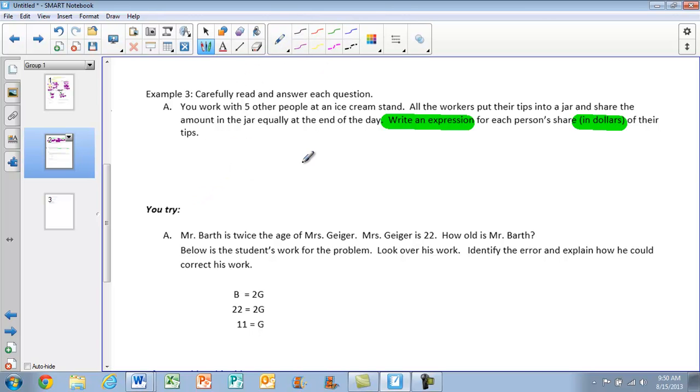So let me think here. I work with five other people. We all put our money into a jar. So amount in a jar. Doesn't say how much money. So I'm going to give this a variable. I'm going to say that's A. And the number of people I work with. Well, if I'm working with five other people, I have to add me in there at the end of the day. So that's six total.